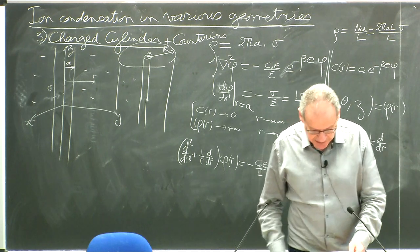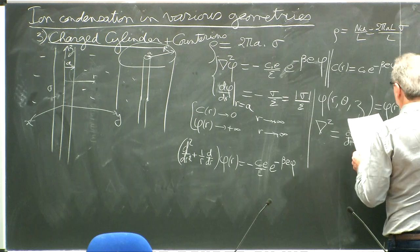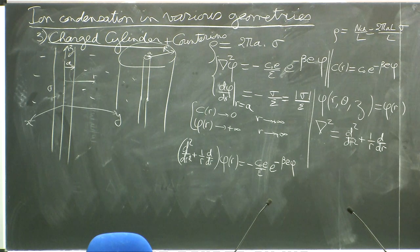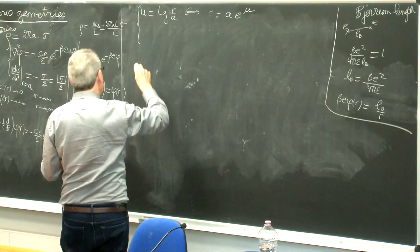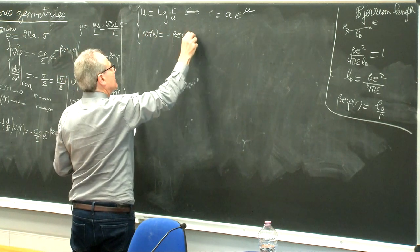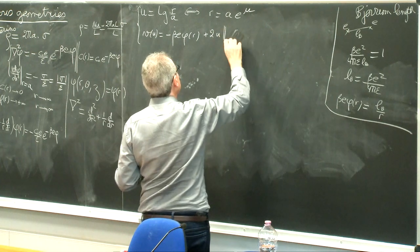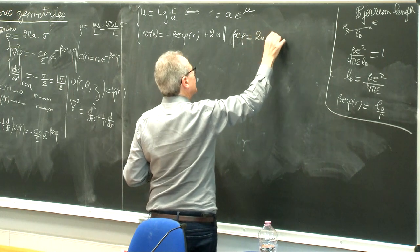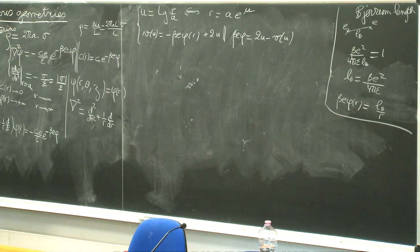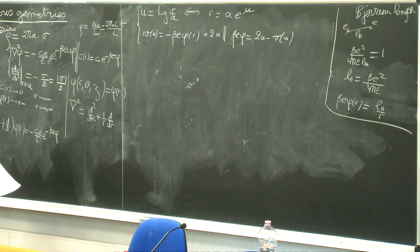We do a change of variable. Define u equals log(r/a), or equivalently r equals a exp(u). And define a new function v(u) equals minus beta E phi(r) plus 2u, or equivalently beta E phi equals 2u minus v(u). Instead of solving for phi(r), I will write the equation as a differential equation for v(u) as a function of u.